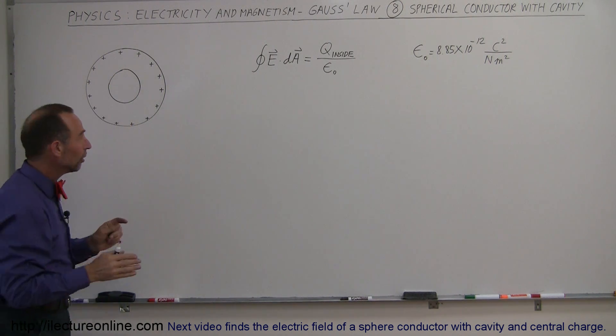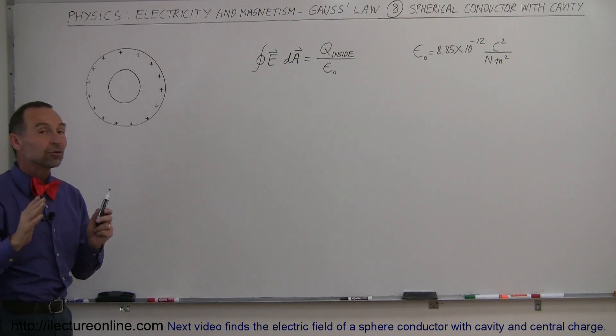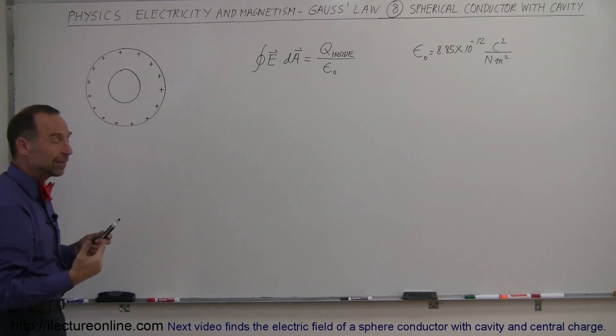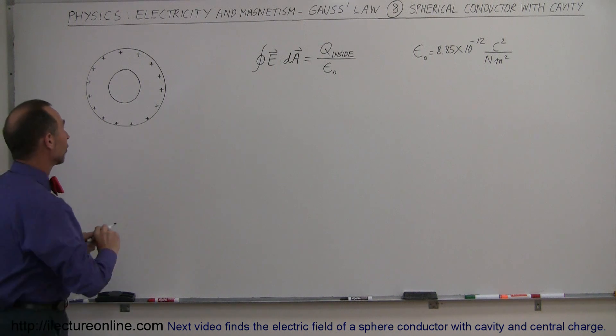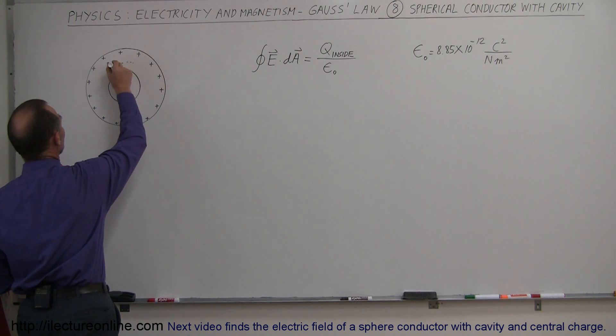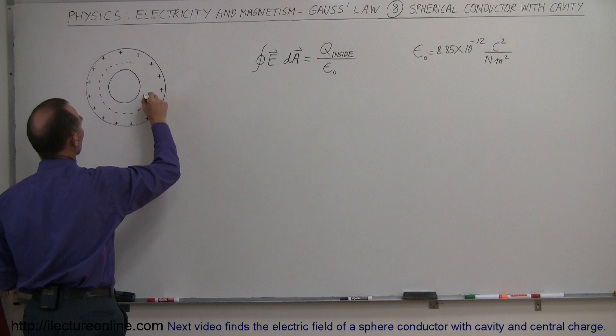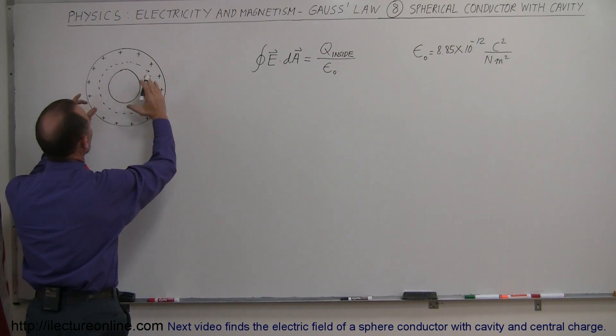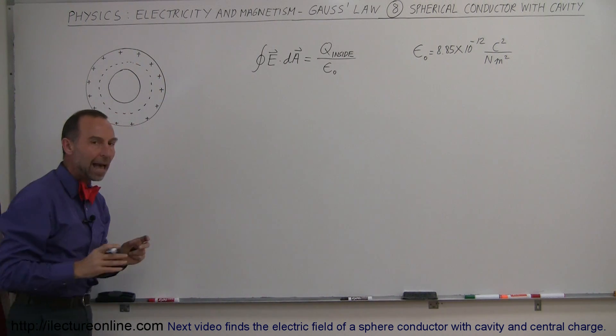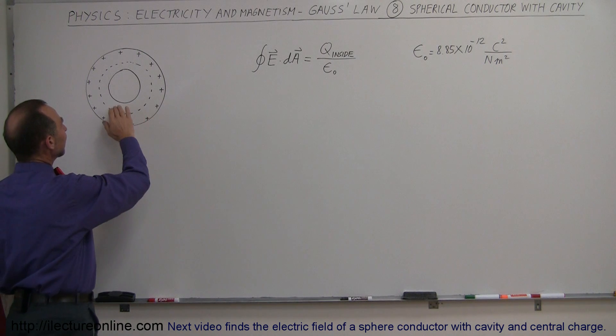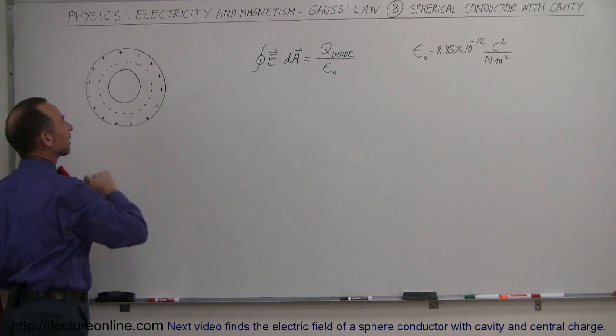Therefore, whether or not there's a cavity there really makes no difference when we look at it from Gauss's law perspective. If we draw a Gaussian surface, like a spherical shaped Gaussian surface inside the conductor and including the cavity inside, notice that in that case there is no charge inside the Gaussian surface.